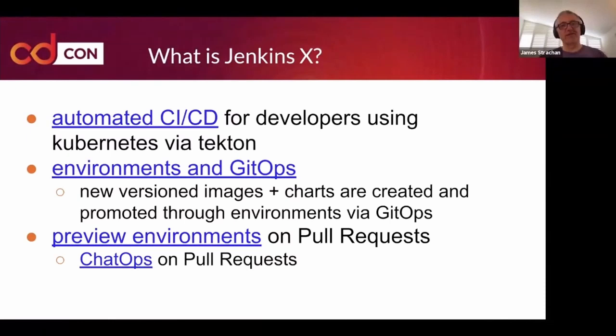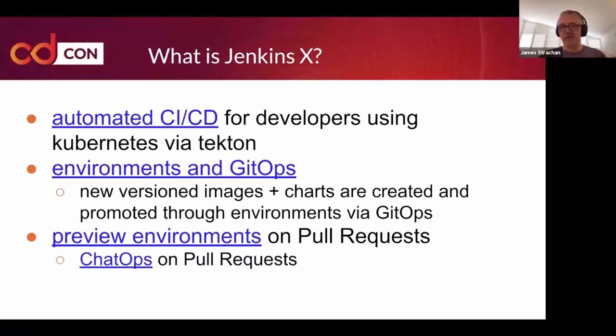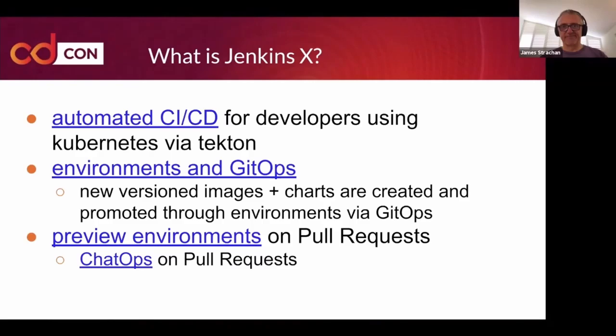Jenkins X also automates environments via GitOps. Whenever you create a new release of your microservice, it automatically creates a pull request in your Git provider to promote the new version of software into your staging or production environments. It also adds preview environments — whenever you create a pull request, it will create a brand new environment in Kubernetes, running your software so your team can give fast feedback on your code change before it merges into the main branch. Jenkins X also supports chat ops and pull requests, which lets you approve code changes, retest things, or reject code changes.